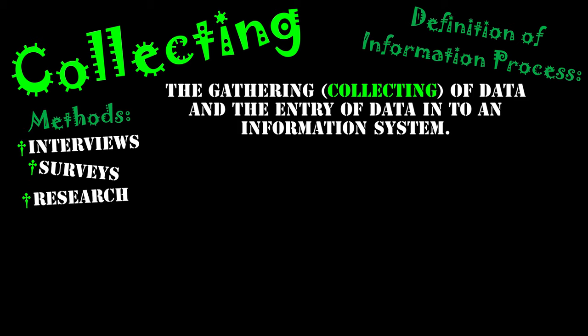Third, we have research. This is when we look into other people's information and use it as our data. It could be from authors in a specific field, or it might be us observing a system in action. From this experience, reading, and gaining knowledge, we obtain data to use in our system.